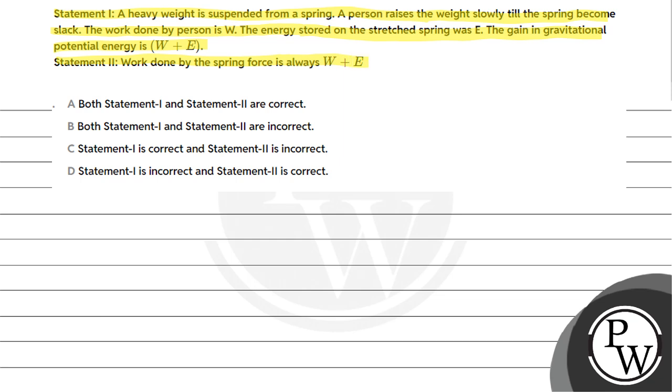Here we have a key concept that the work done by spring is equal to half kx squared, positive half kx squared in case of compression.